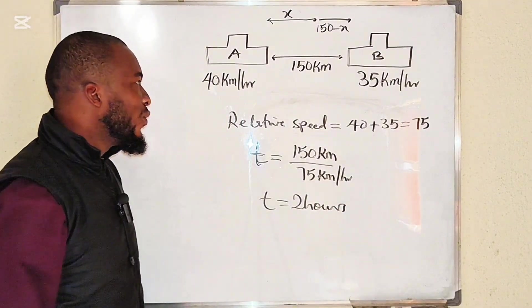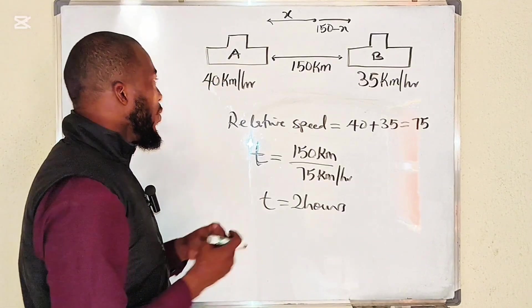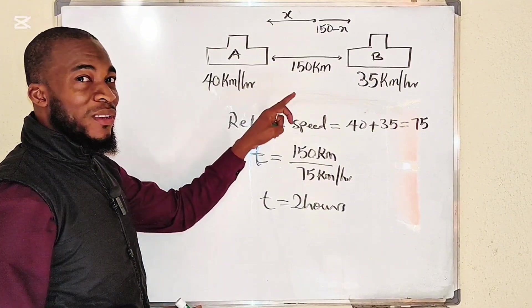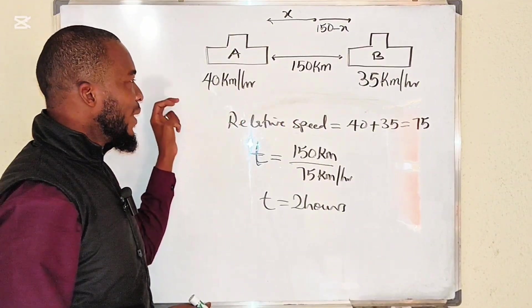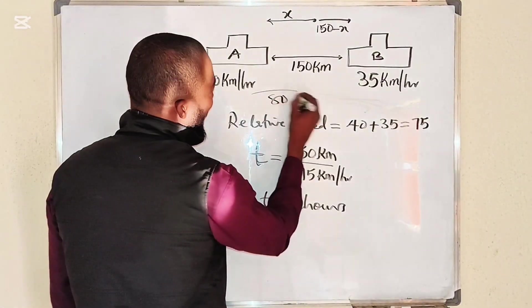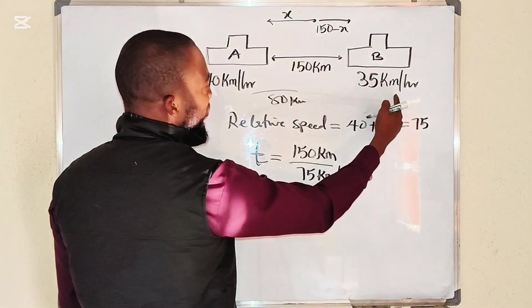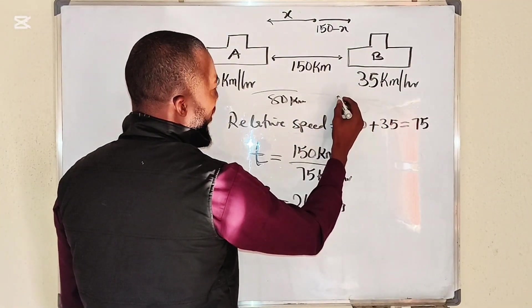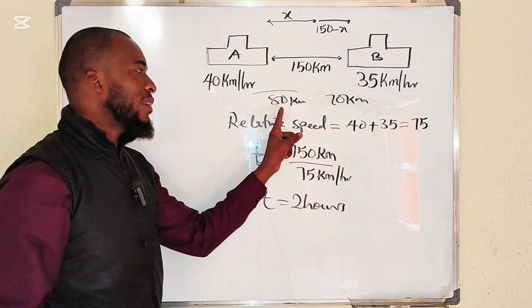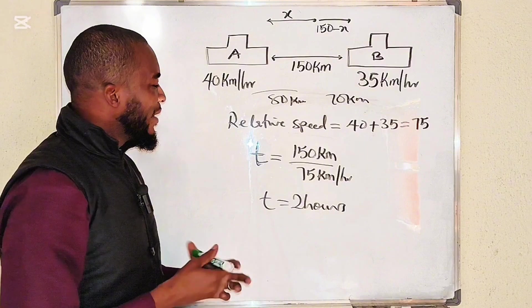To find the distance each car covered before they collide, just take 2 hours and multiply by the speed. Remember, distance equals speed times time. Once you multiply 40 by 2 you get 80 kilometers, and once you multiply 35 by 2 you're going to get 70 kilometers. If you add 80 and 70, you get 150 kilometers.